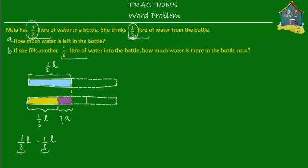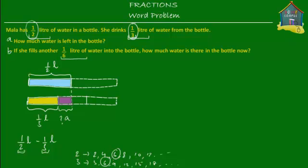We need to express these two fractions in terms of a common denominator. The common denominator is the least common multiple of two and three. The multiples of two are: 2, 4, 6, 8, 10, 12, and so on. The multiples of three are: 3, 6, 9, 12, 15, 18, and so on. The smallest number common to both series is six. So the least common multiple — and therefore the common denominator for these two fractions — is six.